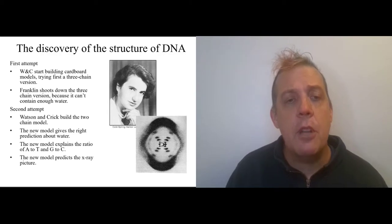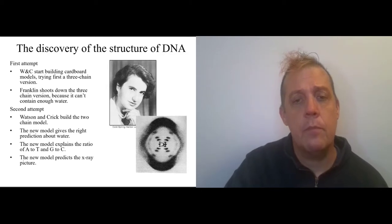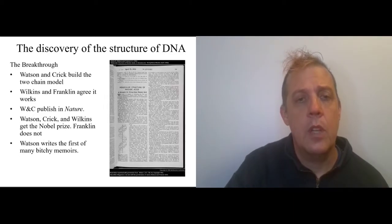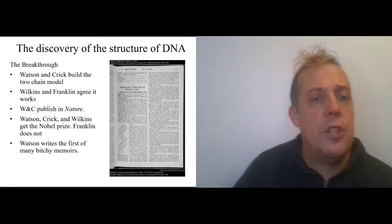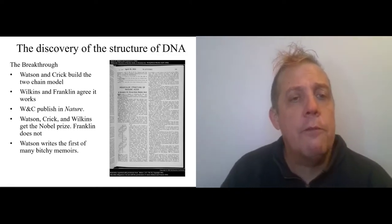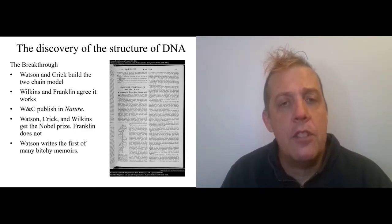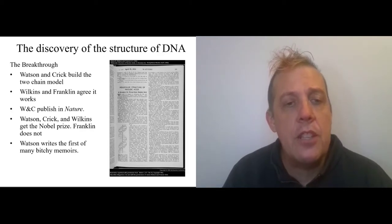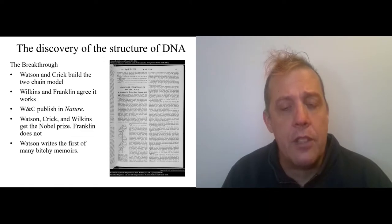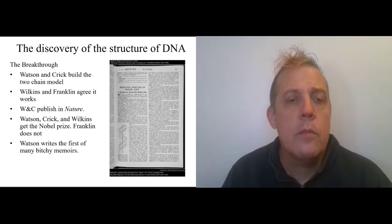And so then they build the two chain model. It makes the right prediction about the water. It makes the right prediction about the equal quantities of these four molecules. And it predicts the x-ray picture that Franklin had produced. So Watson and Crick build the two chain model. Watson and Franklin, Wilkins and Franklin, the other two people in the lab agree that it works. Watson and Crick publish it in the journal Nature, which is the most prestigious journal in science or one of two next to also science. The two prestigious journals are science and nature.